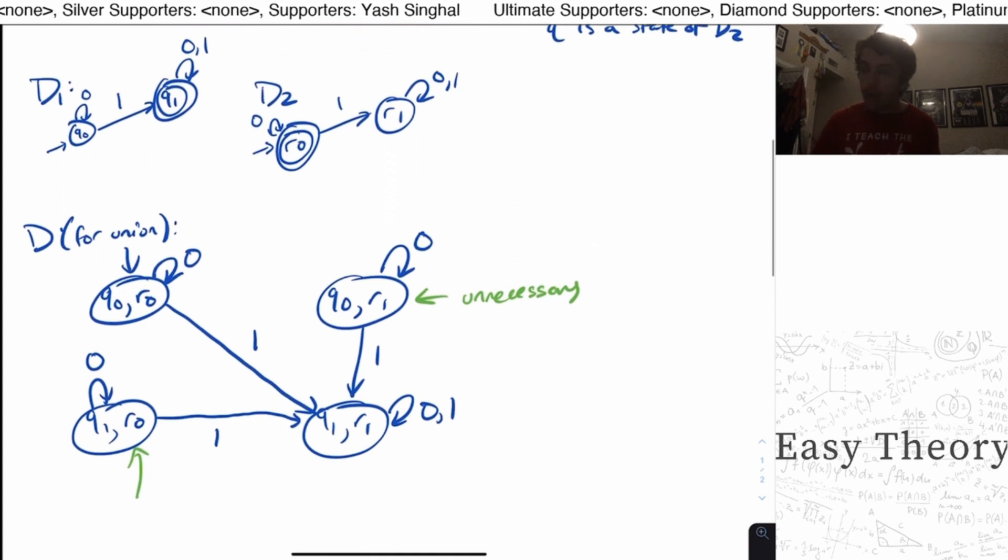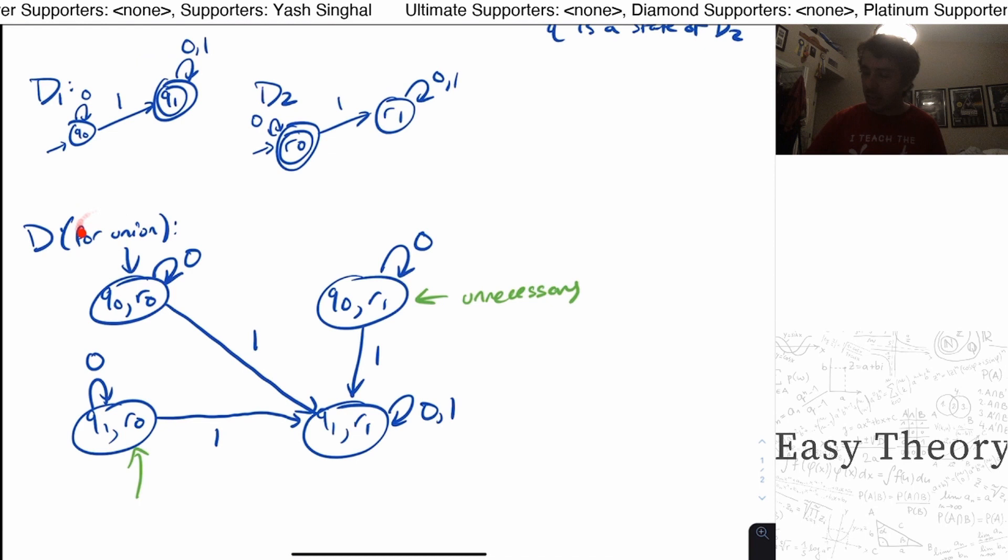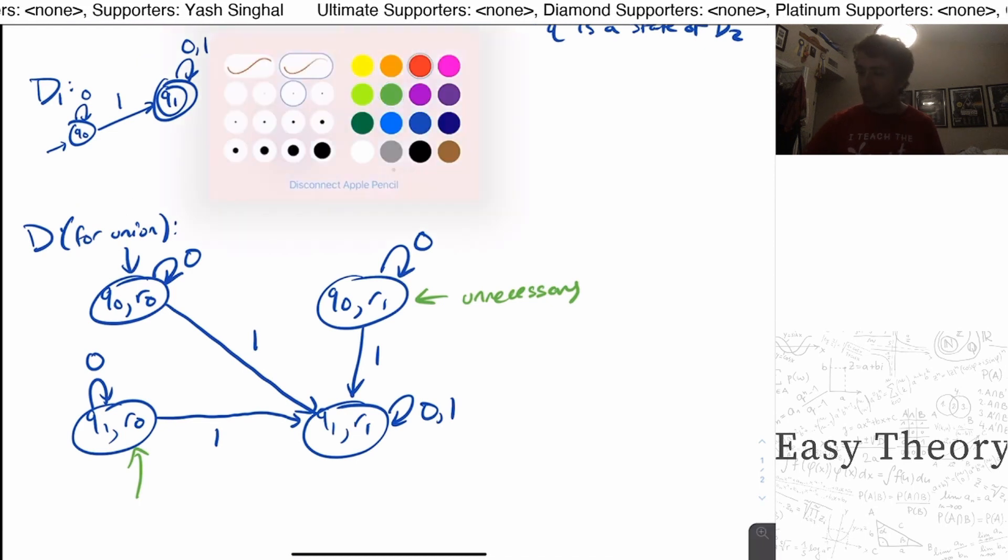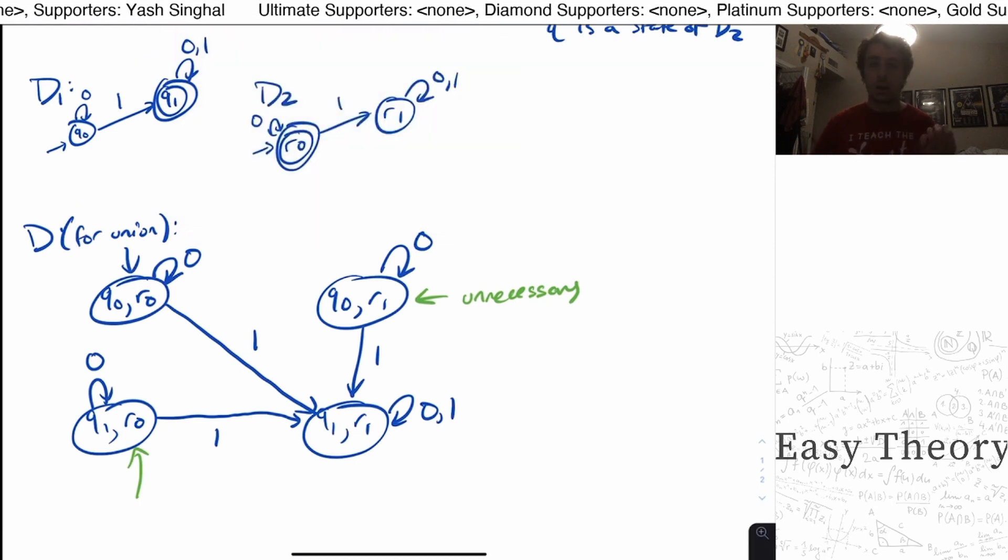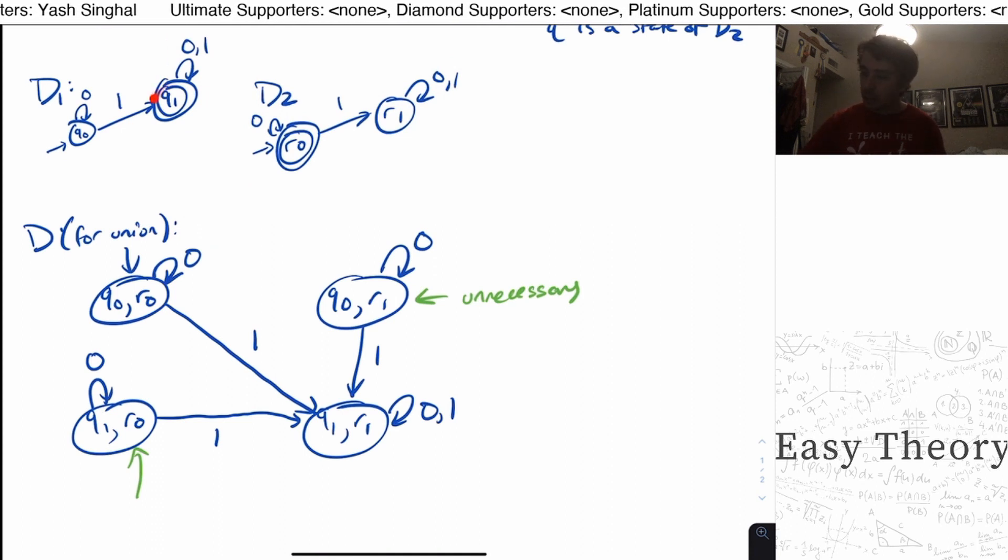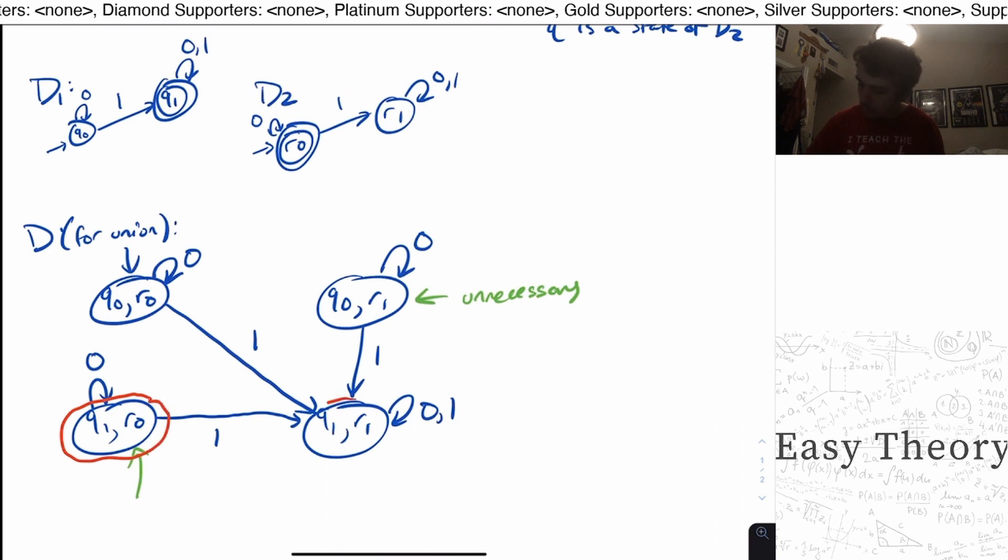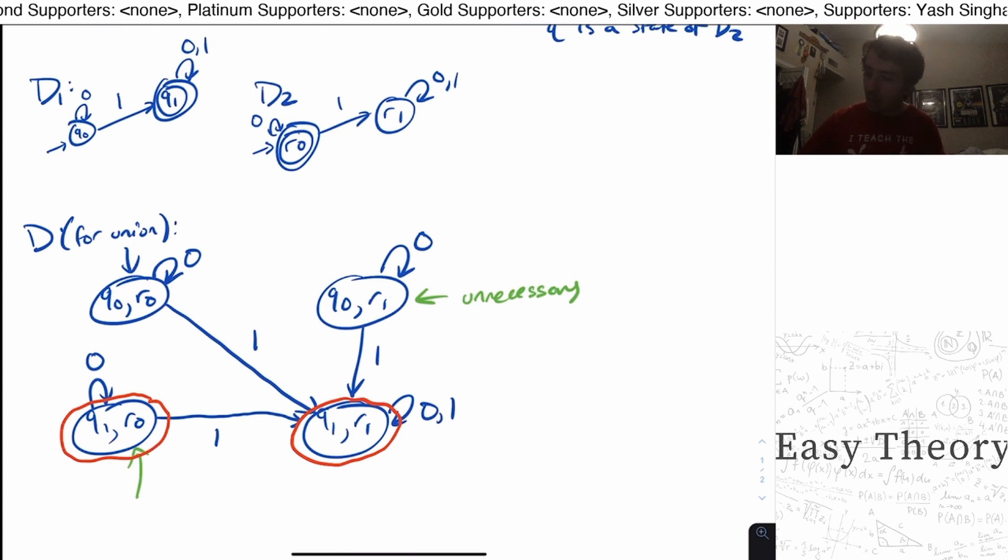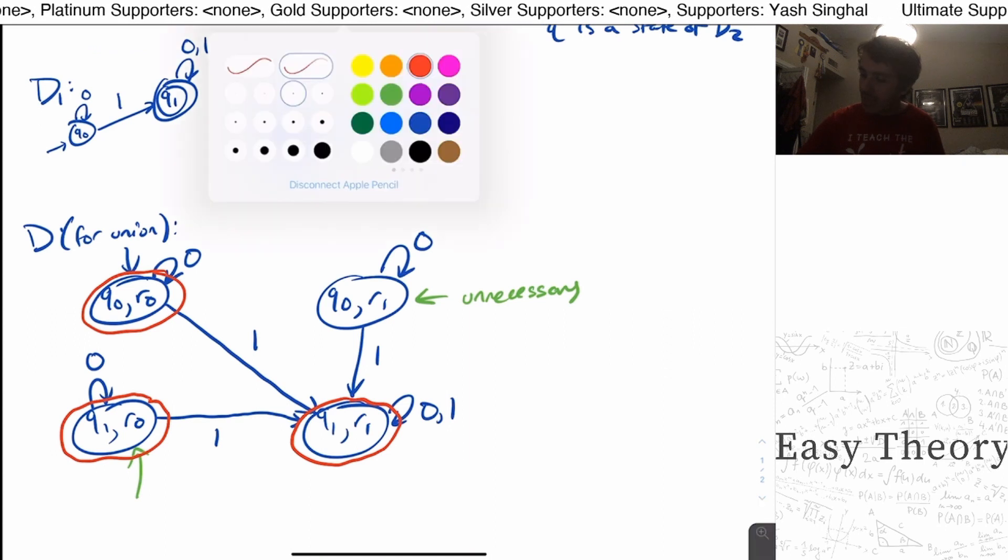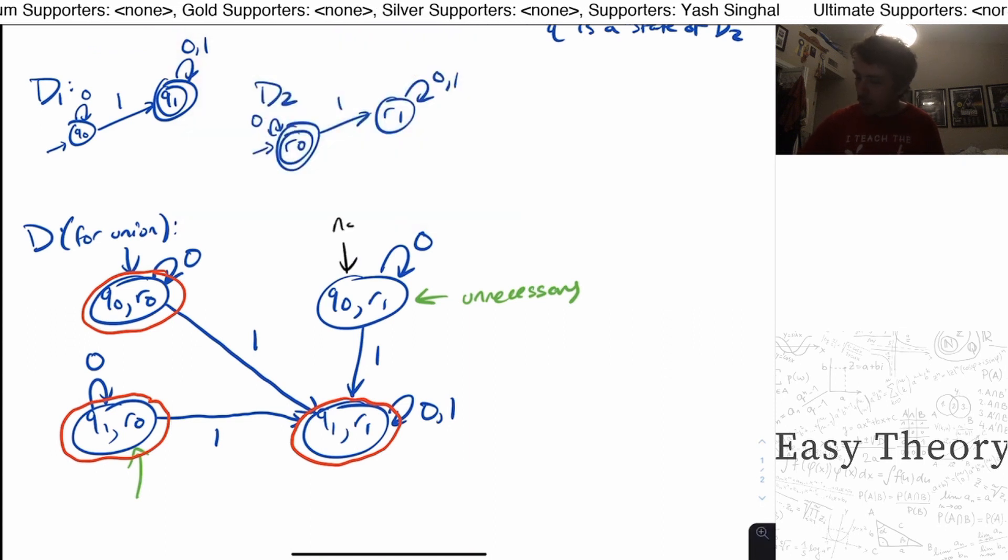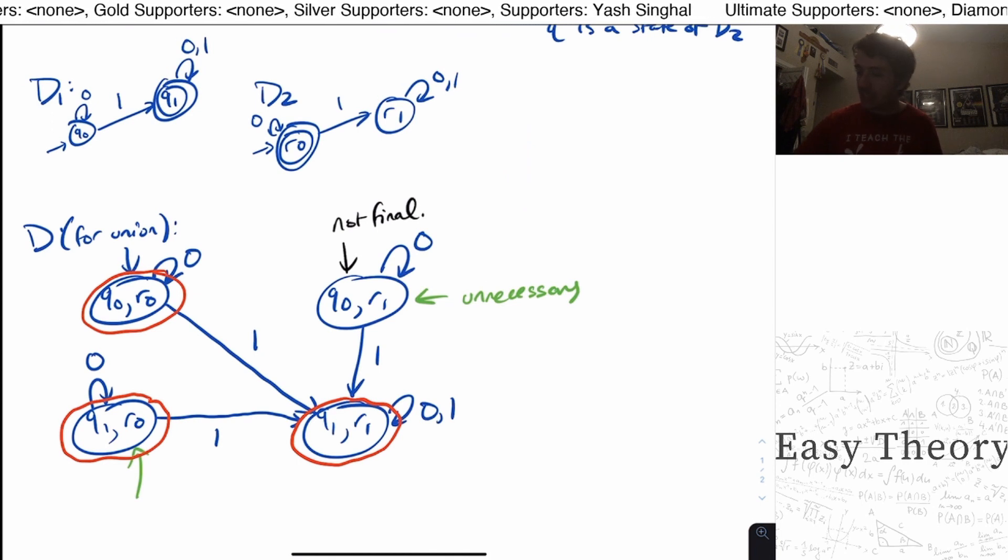So what are the final states in this thing? Well, we're doing union here. So remember, the final states are the ones that are either final in either machine. So if a state has Q1 in it anywhere, then that will be final. So these two states are final. And if we had an R0 anywhere, that's going to be final too. So that means that this state is not final.